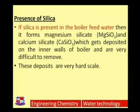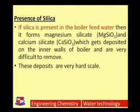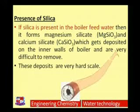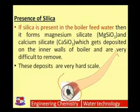Besides that, if silica is present in the boiler feed water, it may react with the hardness-causing salts of calcium and magnesium, converting them into magnesium silicate or calcium silicate, which get deposited on the inner walls of the boiler. These are very difficult to remove — they are very hard scales. As shown in the picture, the scale is deposited on the inner wall of the boiler as a coating.